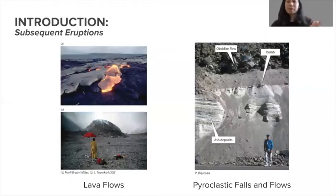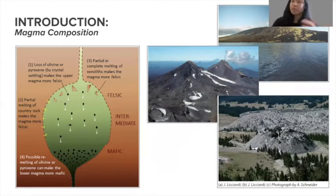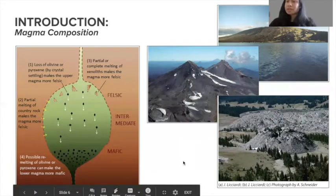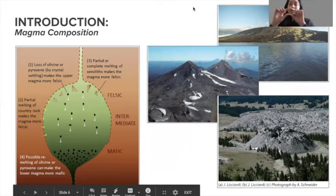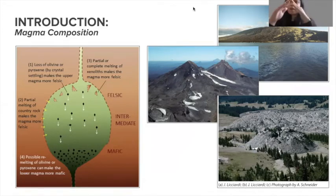It's important to think about composition because then we can look at viscosity. Mafic materials will be more fluid and less viscous, whereas felsic material will be more viscous — more honey-like. That can guide volcano morphology. For example, the top image on the right shows a basaltic shield volcano made of more mafic magma, so it's longer and lower. Whereas stratovolcanoes, like the image in the middle, can build themselves up because they're made of more felsic, more viscous magma.